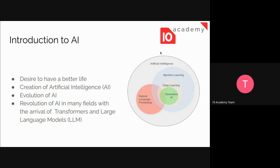There is another subset called generative AI, which focuses on generating images, text, and video. The revolution of AI today in many fields comes with the arrival of transformers and large language models. This is the intersection of generative AI, deep learning, and natural language processing, and this is what we can say in general about AI for speech generation.